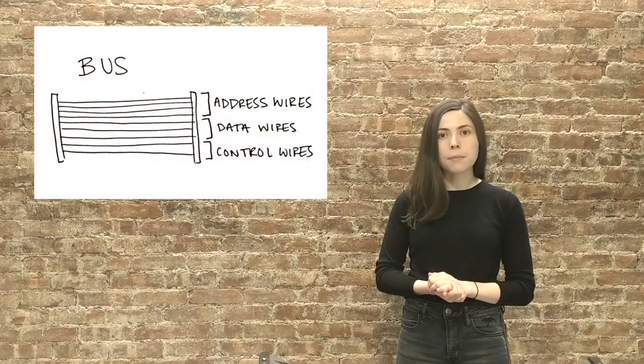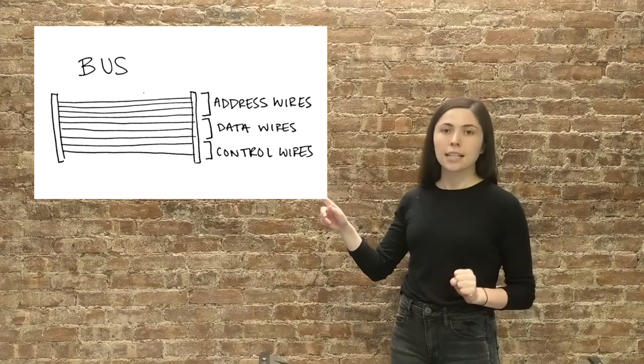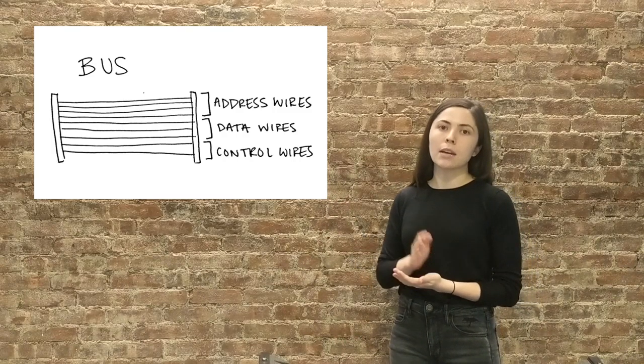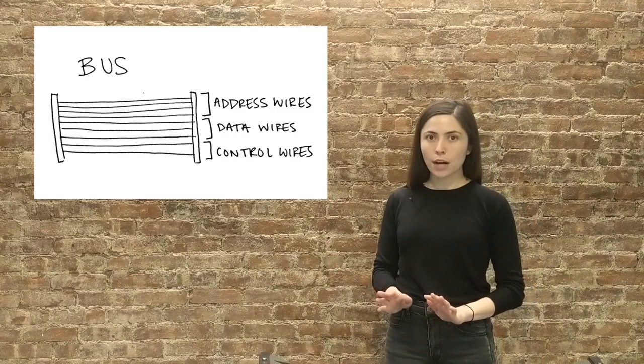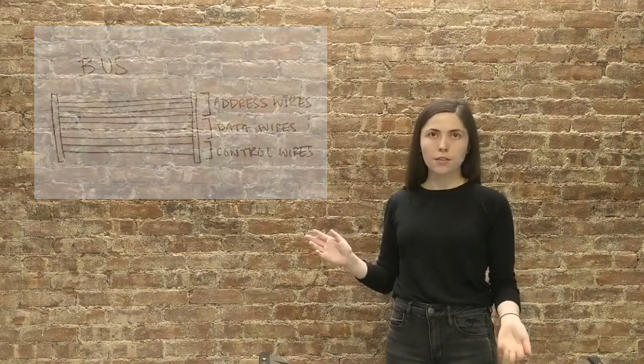Buses themselves are made up essentially of just three different sets of wires. The first set is a set with the address in memory it wants to access. The second set of wires contains any relevant data for the transaction. The third set of wires are called the control wires.